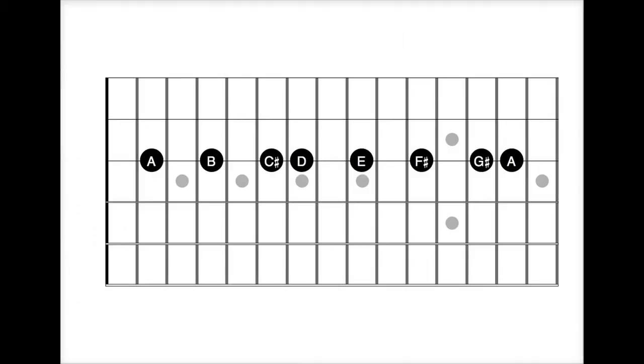And we're going to do that by moving the C sharp down to a C. So we're going to flat the third, we're going to flat the sixth, which is F sharp, and then we flat the G sharp, and that becomes G.